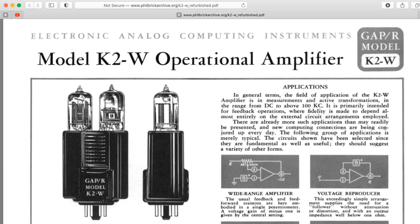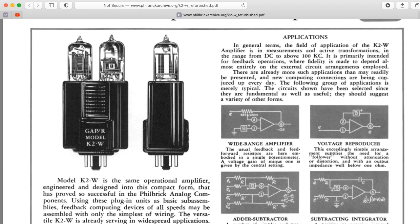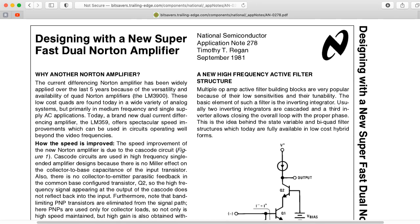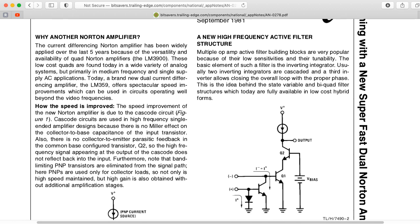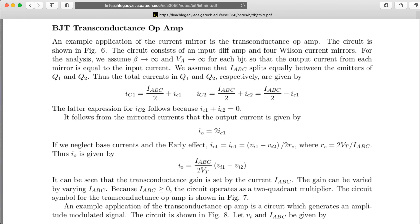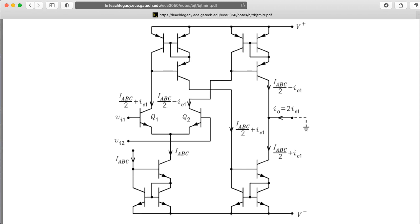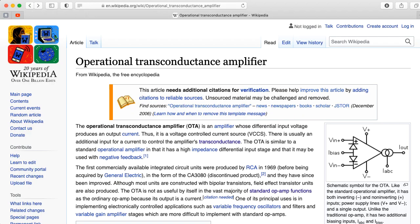So we've talked about op-amps that have differential voltage inputs and voltage outputs and Norton amplifiers that have differential current inputs but voltage outputs. Now let's flip around the idea of a Norton amplifier and instead of having current inputs and voltage outputs, we'll have differential voltage inputs like on a regular op-amp, but the output will be a current. Such contraptions are called operational transconductance amplifiers or OTAs.